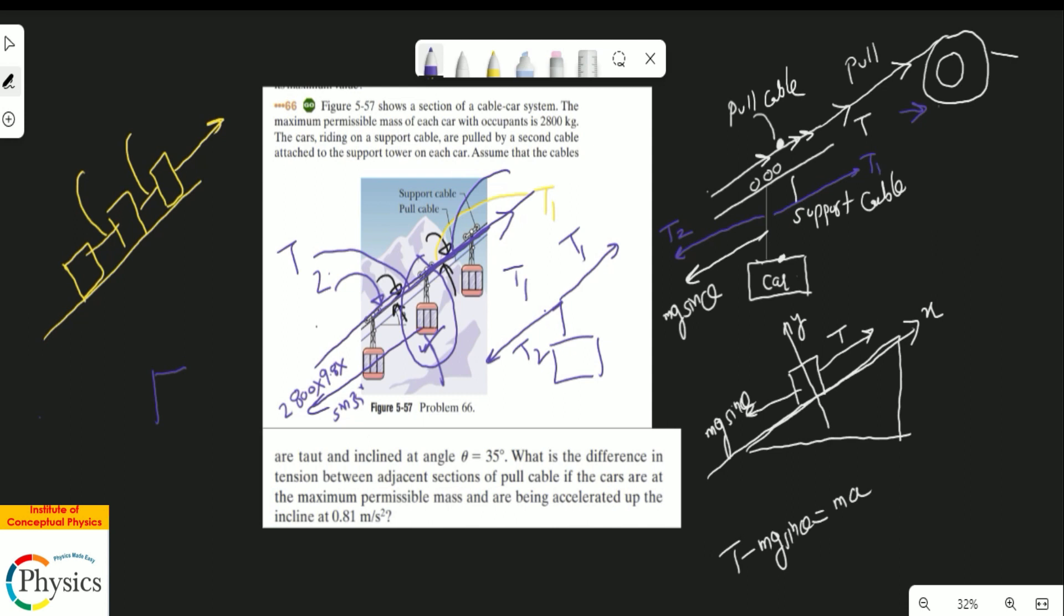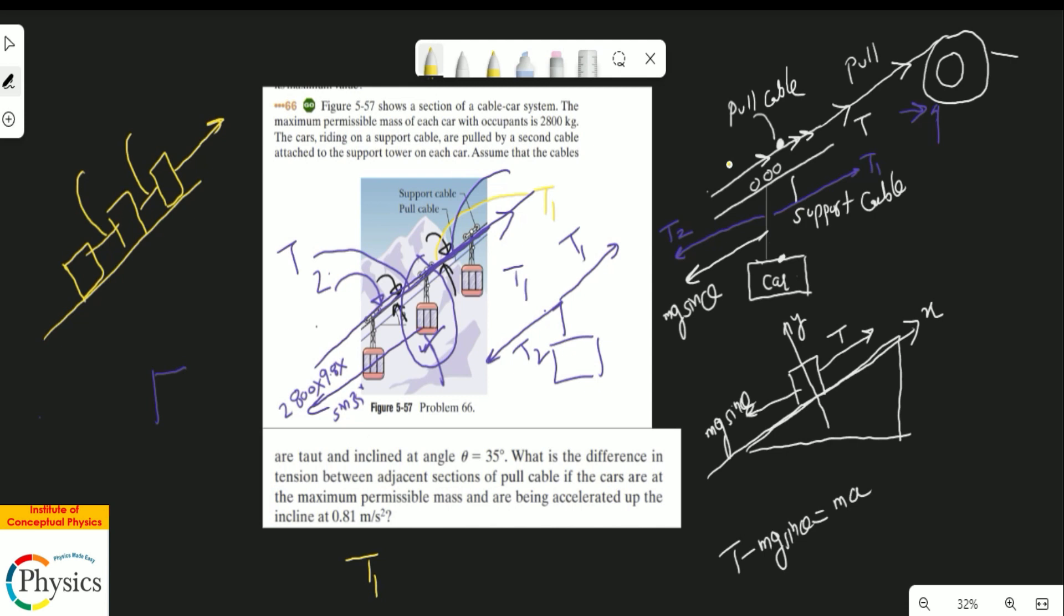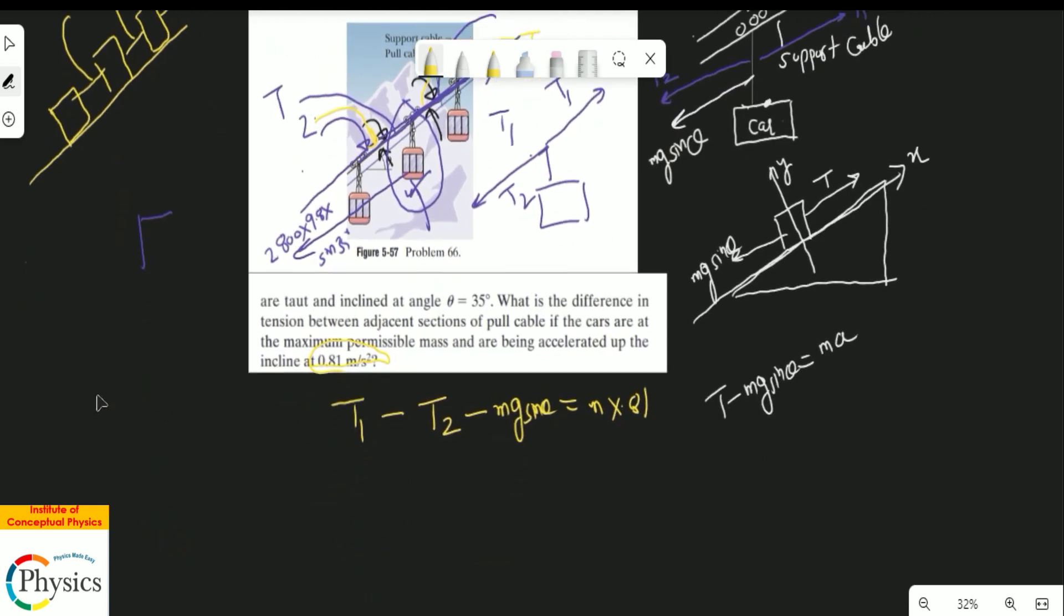If you notice the car cable very carefully, it is also subjected to one more tension, which is T2 in the adjacent section, and then it is subjected to T1 upward which is coming from the wheel. If you write down the equation now using this free body diagram, it's T1 which is upward, minus the tension on the left-hand side coming from this section, minus its own weight (mg sin θ), and the net acceleration it is moving in is m × 0.81.